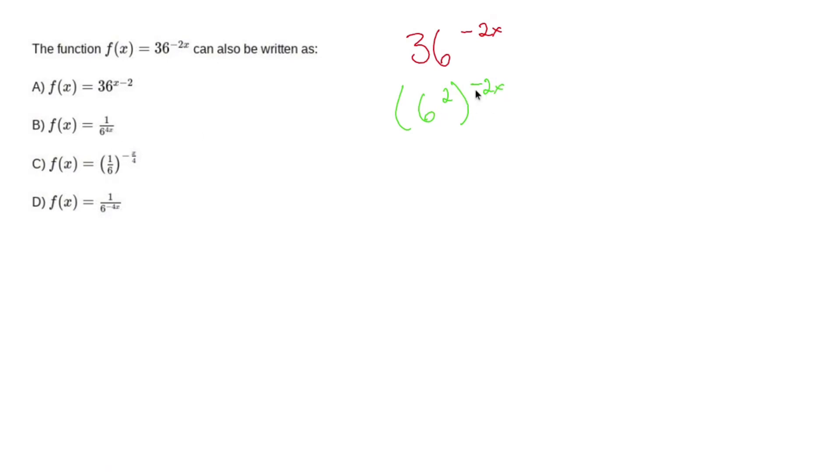Now whenever you have a power to an exponent, you multiply exponents. So this becomes 6 to the negative 4x.